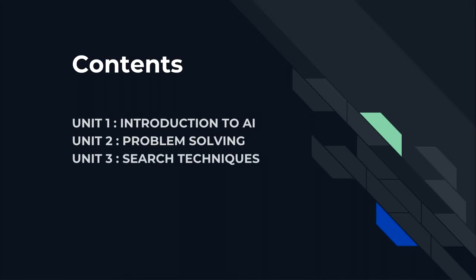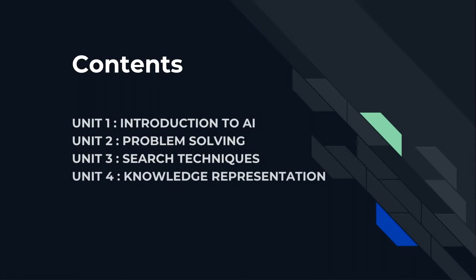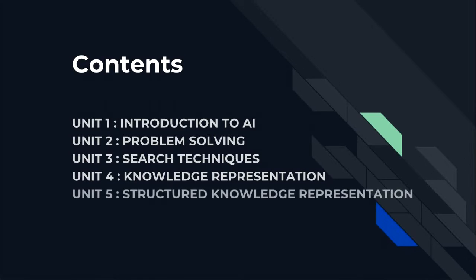Likewise, in unit 3 we will be seeing different search techniques such as hill climbing search, heuristic search, and so on. And in unit 4 we will be seeing how knowledge is represented. Unit 5 will be structured knowledge representation, which will include different representation mappings and so on.